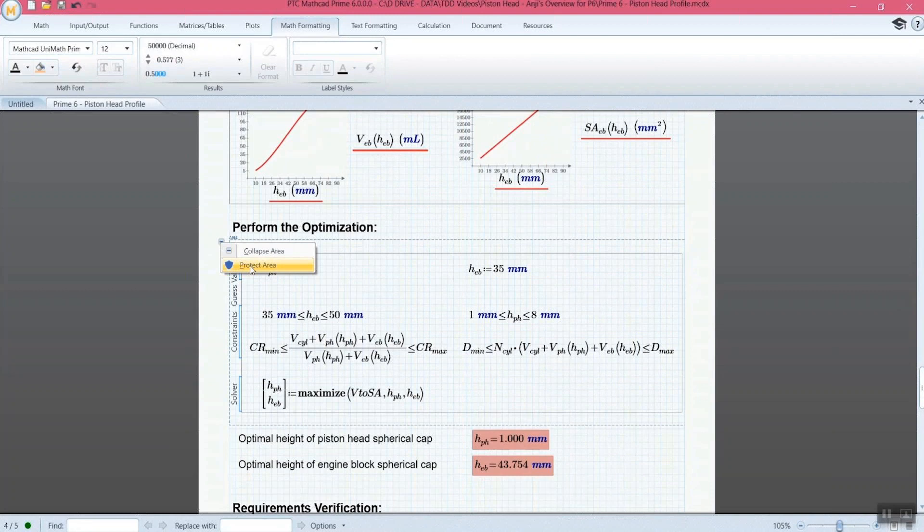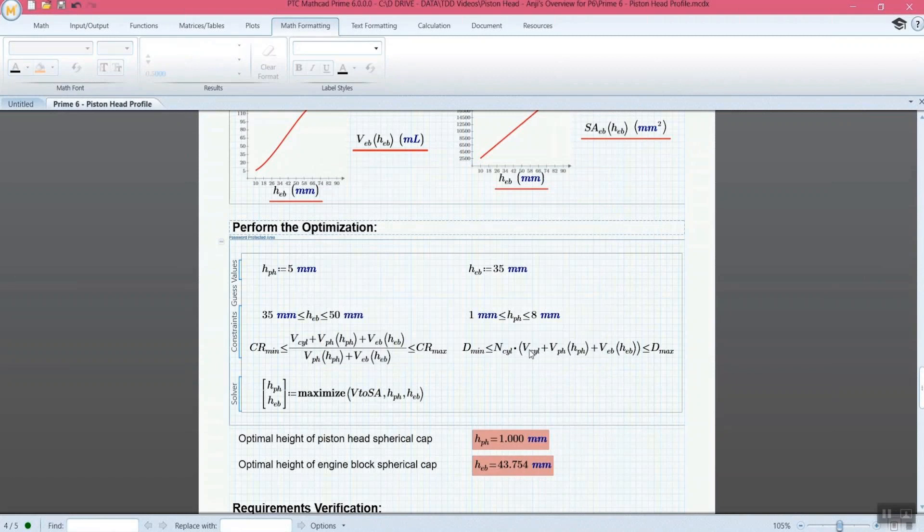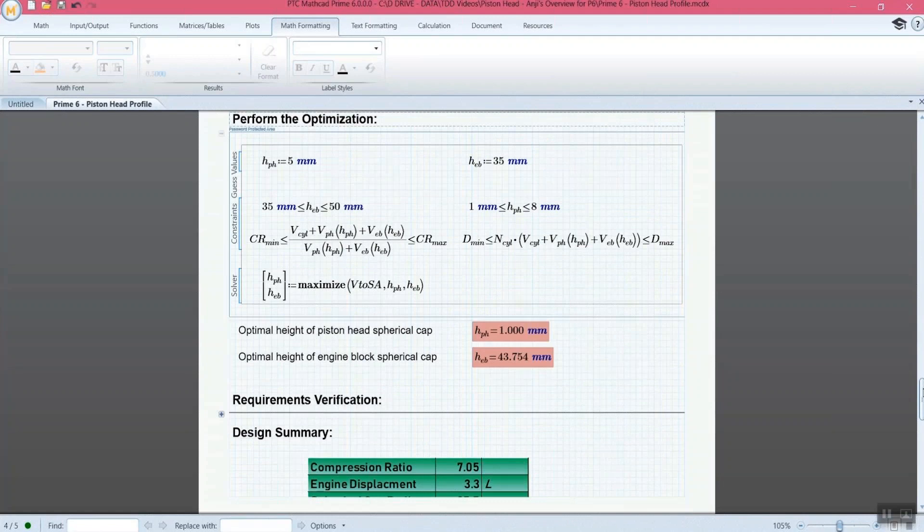And then here we're performing the optimization. So here we have another collapse section and we're going to protect this section. So performing the optimization, we're going to enter a password that says you need to have a password to be able to change this expand collapsed area. And we've just set it to expand. So that means that without the password, you're not going to be able to collapse it. And that's really important for a couple of reasons. One, if you want to make sure that somebody sees this information, you know that they're going to see it.